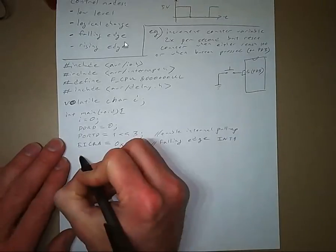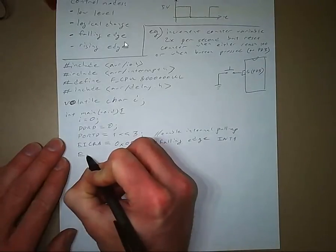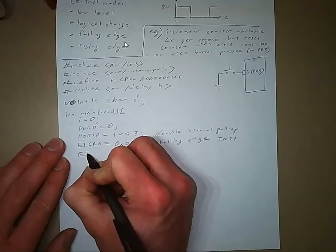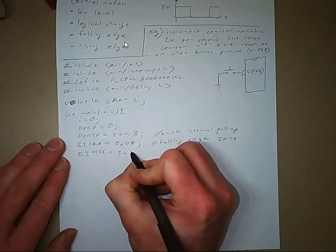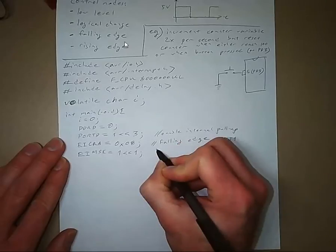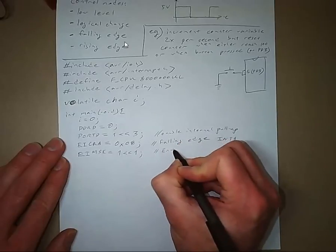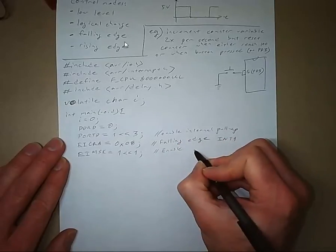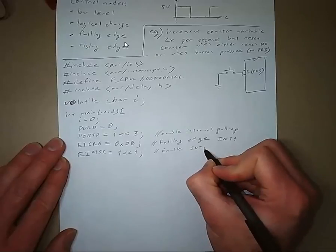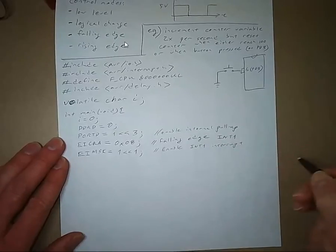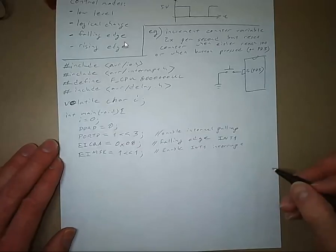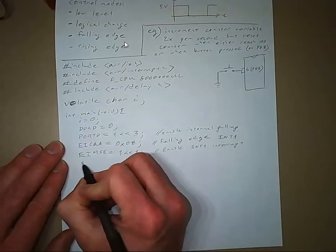And next we need to enable the external interrupt. So external interrupt mask. And we'll write a one to bit one. And now what comes next when using interrupts? We have to enable interrupts globally. So SEI.